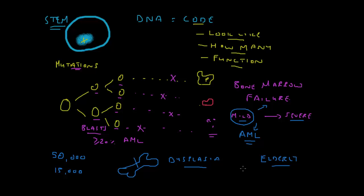We must also remember that MDS is either primary or secondary. The primary ones, which comprise about 90% of cases, do not have a clear cause. The secondary ones are patients who have previously been exposed to toxins, chemicals, chemotherapy, or high-dose radiation, and then, often a few years later, develop bone marrow failure due to myelodysplastic syndrome with an increased risk of developing acute myeloid leukemia. It is very important to recognize this 10% of patients because their treatment may be slightly different.